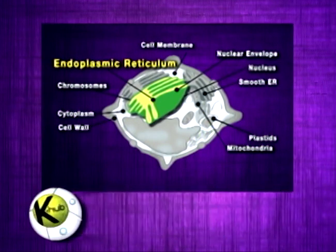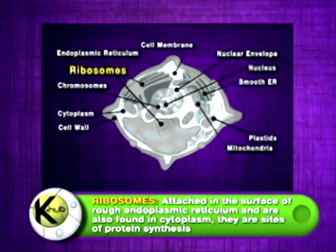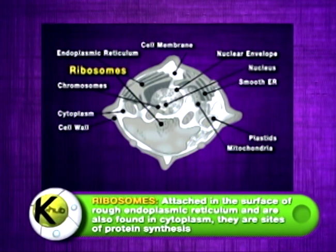Ribosomes are attached to the surface of the rough endoplasmic reticulum and are also found in the cytoplasm. These are sites of protein synthesis.